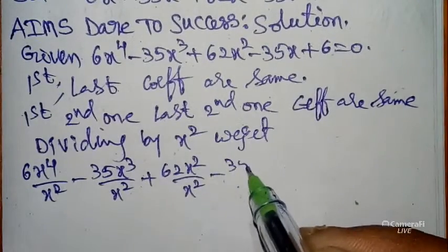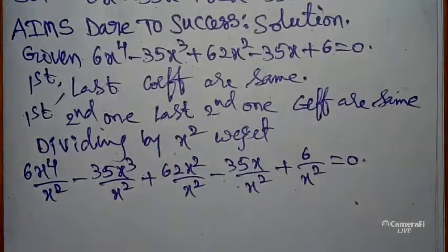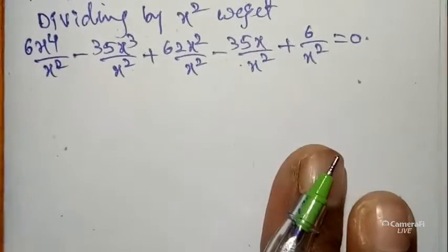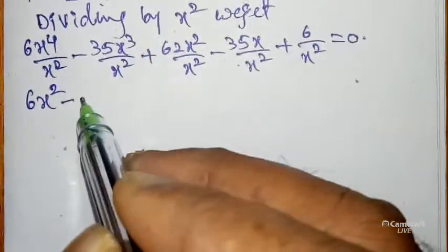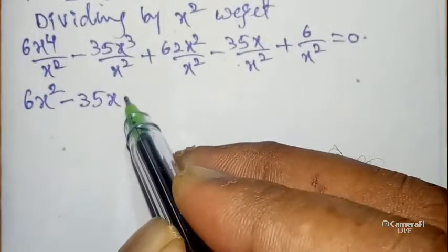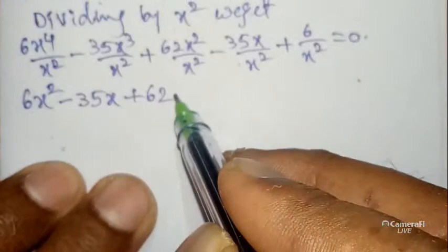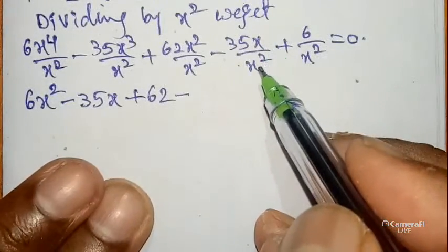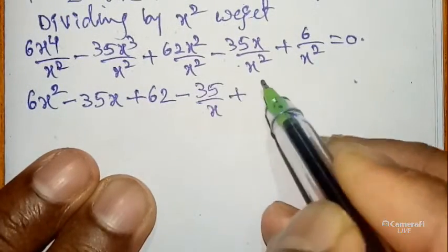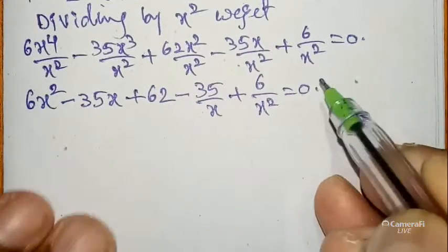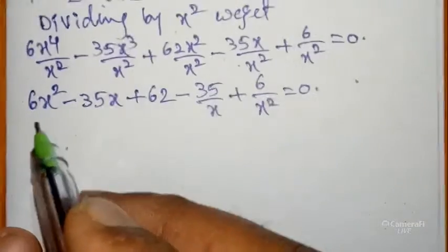Dividing by x² we get: 6x⁴/x² minus 35x³/x² plus 62x²/x² minus 35x/x² plus 6/x² equals 0. After cancellation: 6x² minus 35x plus 62 minus 35/x plus 6/x² equals 0.